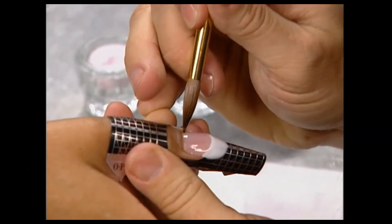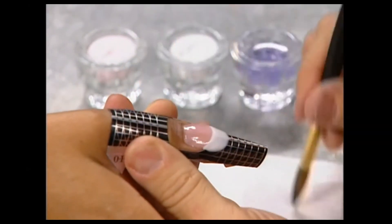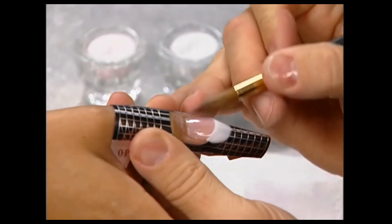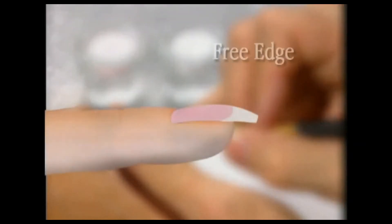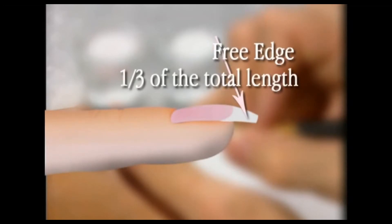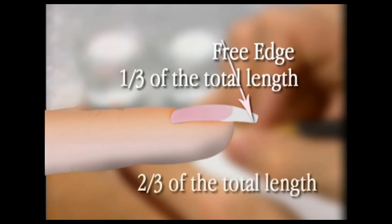This technique is for creating salon length nails following OPI's one-third two-third nail structuring principle. The length of the free edge is one-third of the total length of the finished nail, and the remaining two-thirds of the nail is acrylic overlay over the natural nail beds. This formula builds a structurally strong nail that keeps clients coming back.